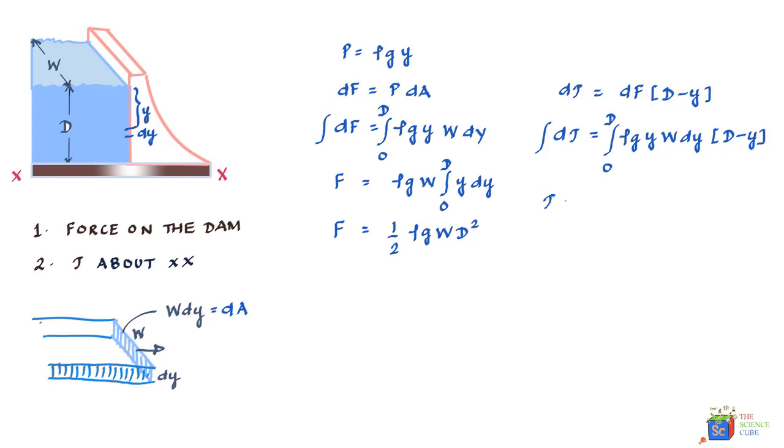So if we rearrange the terms, what you'll get is torque is equal to, we take ρgw outside and we integrate 0 to d, y into d minus y dy. And when you do this, what you'll find is that this equals ρgw into dy squared upon 2 minus y cubed upon 3.